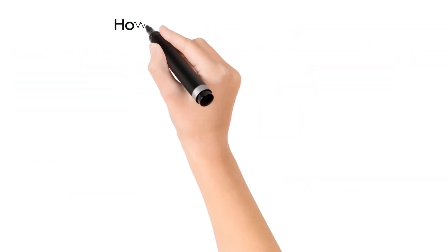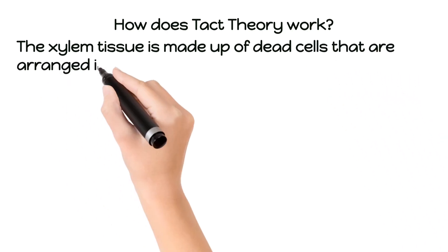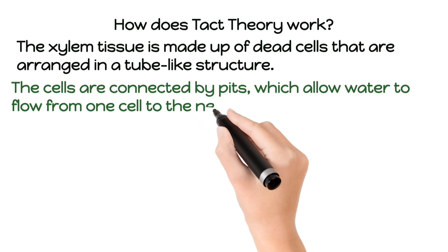How does TAC theory work? The xylem tissue is made up of dead cells that are arranged in a tube-like structure. The cells are connected by pits which allow water to flow from one cell to the next.